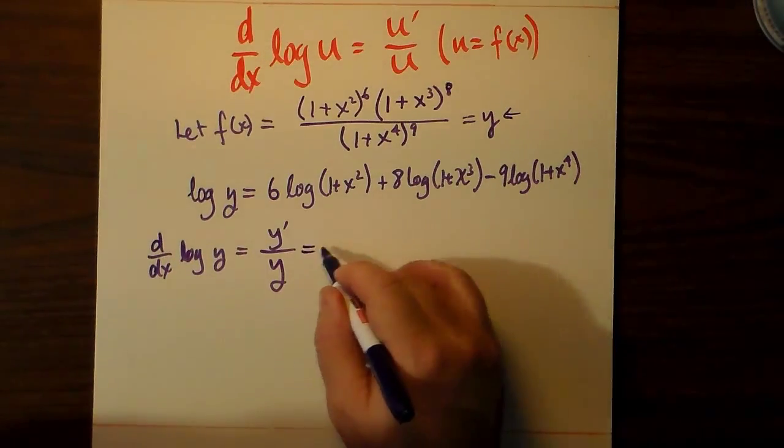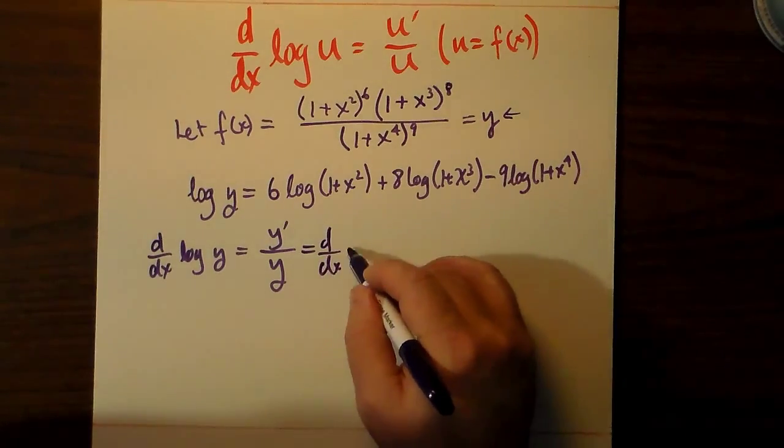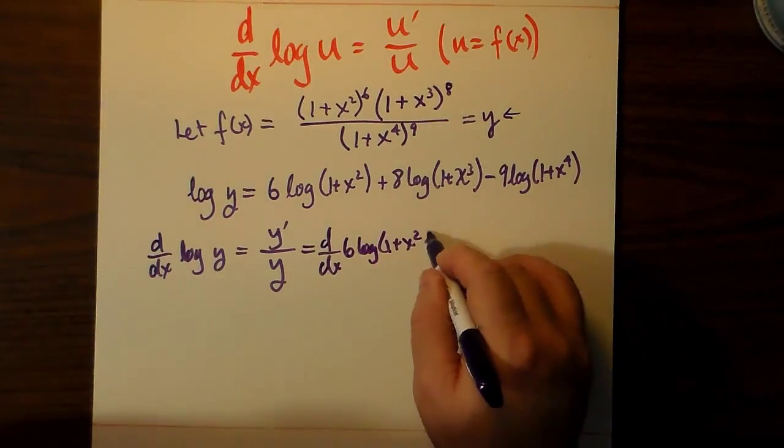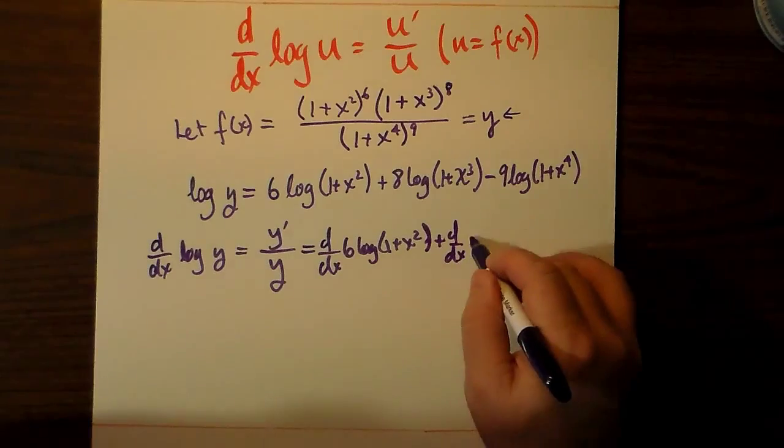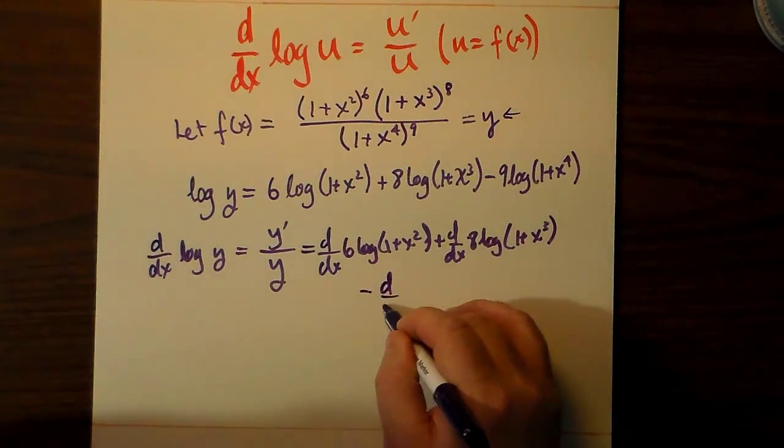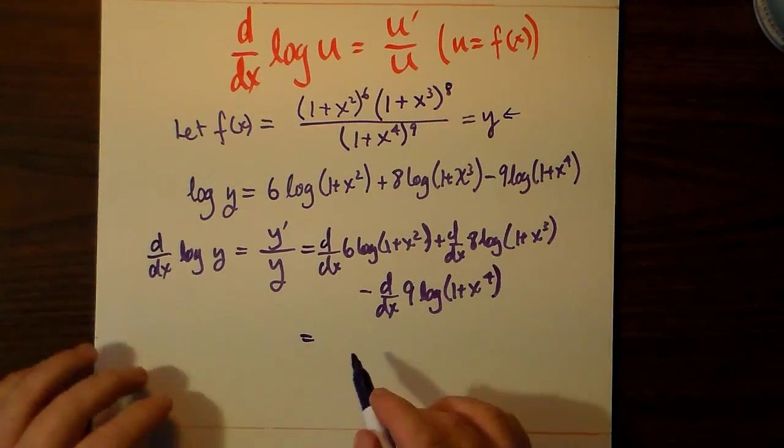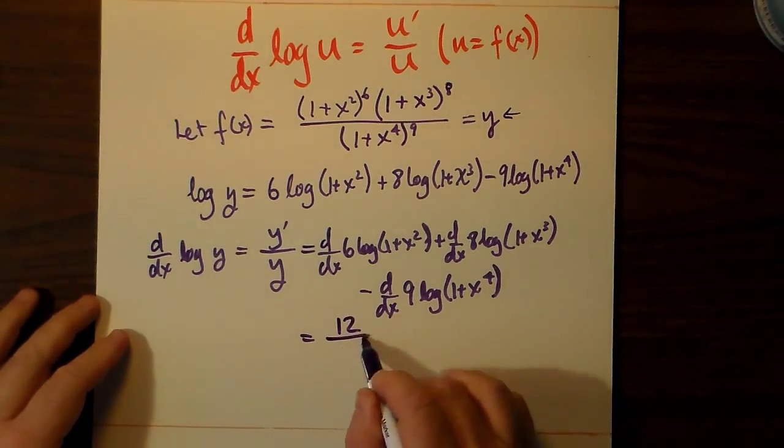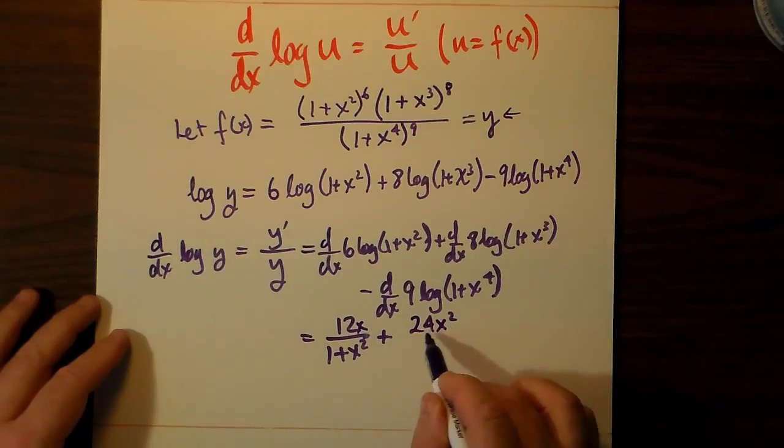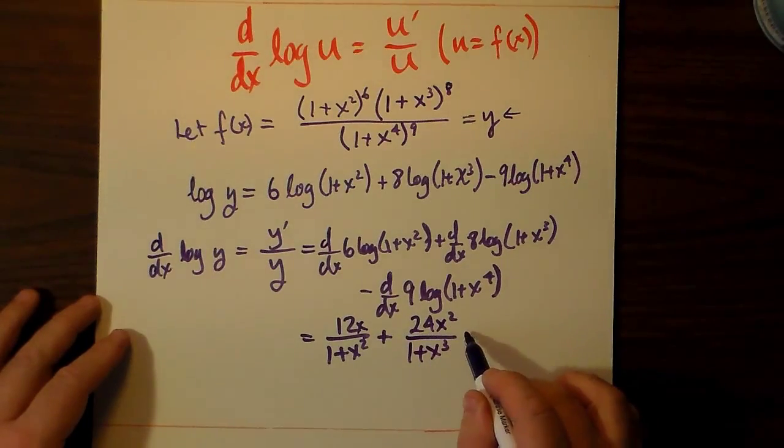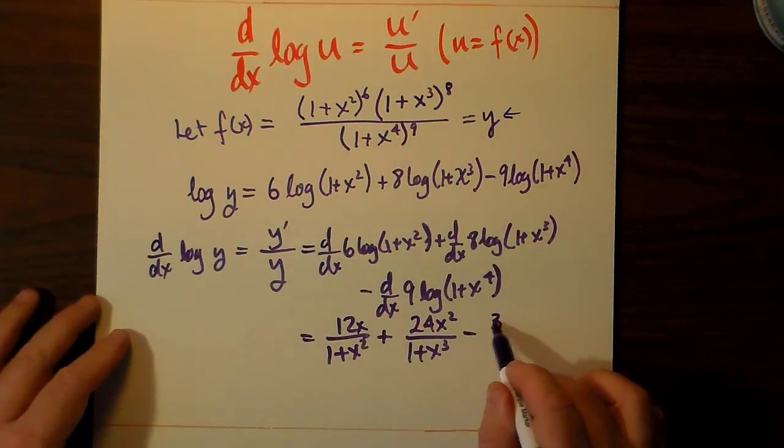remember that's y prime over y, which means that we can simply just take the derivative of each of the terms, the derivative of 6 log 1 plus x squared plus the derivative of 8 log 1 plus x cubed minus the derivative of 9 log 1 plus x to the 4th, and we just write out our three rational functions as the result.